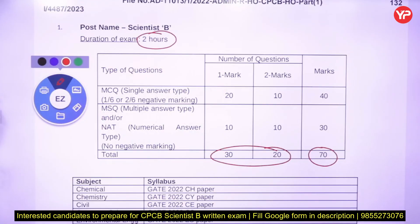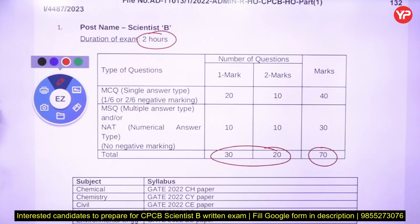Three types of questions will come: MCQ, MSQ, and NAT. Numerical answer type does not have negative marking. MCQs have negative marking — one-sixth and two-sixths. MCQs: thirty questions, twenty one-mark and ten two-mark, total forty marks. MSQs or NAT: ten one-mark and ten two-mark questions, thirty marks. Total: fifty questions, seventy marks.